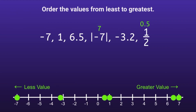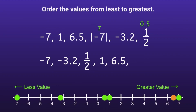Now that we have all these numbers graphed, we can see on the number line that the numbers all the way to the left have less value than the numbers to the right. Starting with negative 7, we can put these numbers in order from least to greatest: negative 7, negative 3.2, 1 half or 0.5, positive 1, 6.5, and finally the absolute value of negative 7, which is positive 7.